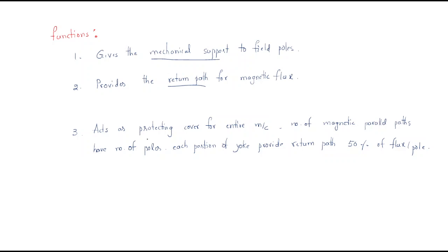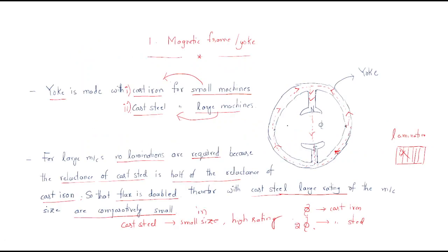The third function is that it acts as a protecting cover for the entire machine. It is a stator surrounding the rotor. This magnetic frame works as a protecting cover, protecting from atmospheric conditions like rain and temperature.